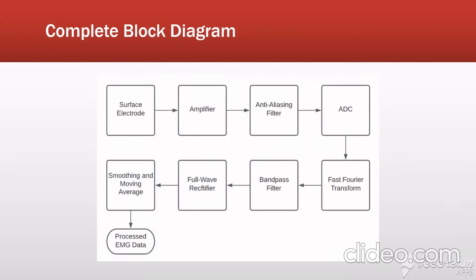Here I have outlined the general process in which a person could take a surface electrode to measure these electrical impulses from a patient's muscle, and then process that raw EMG data into data that can be analyzed by a physician to detect neurodegenerative diseases or be used in other applications.